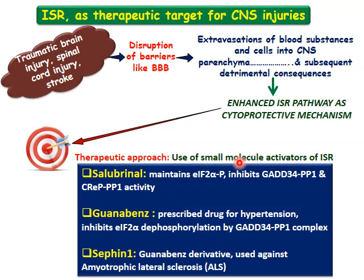We can briefly exemplify this with respect to CNS injuries, which is a broad aspect consisting of traumatic brain injury, spinal cord injury, and brain stroke. CNS injuries lead to disruption of barriers like the blood-brain barrier and blood-cerebrospinal fluid barrier, causing extravasation of blood substances and cells into CNS parenchyma, with subsequent detrimental consequences like oxygen deprivation, excessive cytokine production, and amino acid deprivation.